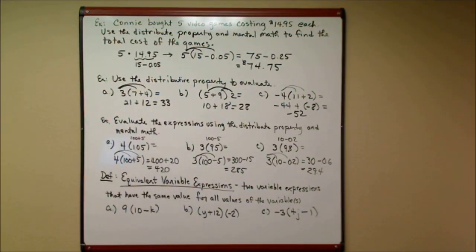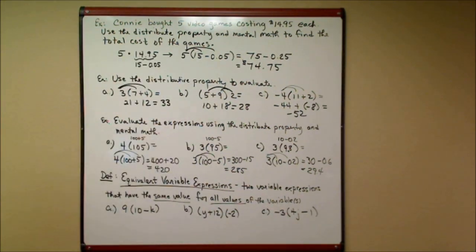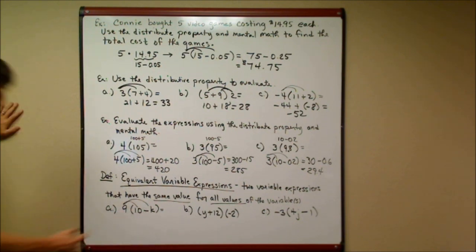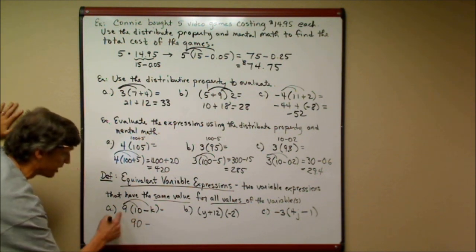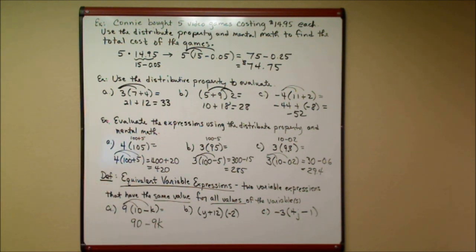This definition is key because we'll always be working with equivalent expressions. Two variable expressions are equivalent if they have the same value for all values of the variable or variables. For the examples below, I'll use the distributive property. Note I cannot subtract 10 − k because I don't know what k represents. So: nine times (10 − k) gives ninety minus 9k. That's as far as it goes — it is exactly 90 − 9k.